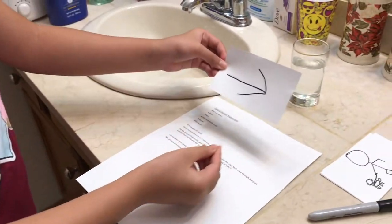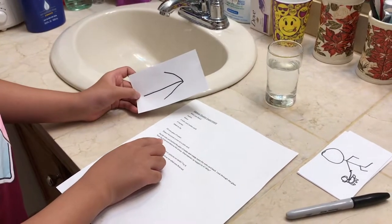I drew a horizontal arrow on the note card. Now I need to put the note card behind the glass of water and slowly move the note card back.